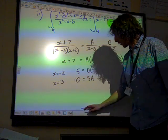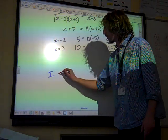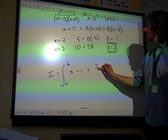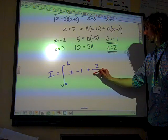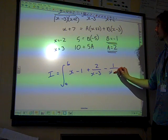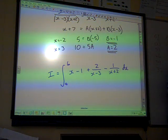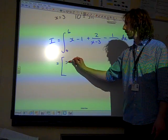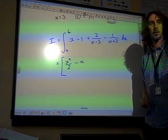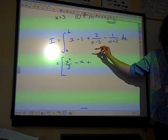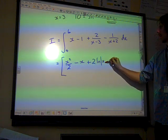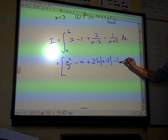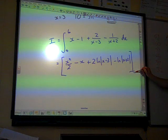And so the integral now becomes, back to the integral, it's the integral from 4 to 6 of X minus 1 plus 2 over X minus 3 minus 1 over X plus 2 dX. And now we can just deal with this one term at a time. Integrate X: X squared over 2. Integrate minus 1: negative as minus X. Integrate 2 over X minus 3, well that's 2 times the natural log of X minus 3. Integrate minus 1 over X plus 2, that's minus the natural log of X plus 2. Between 4 and 6.